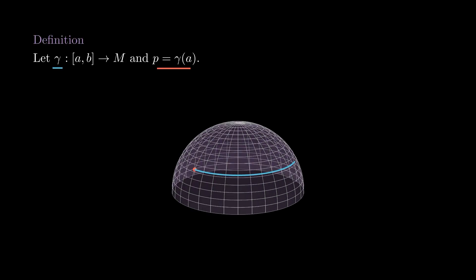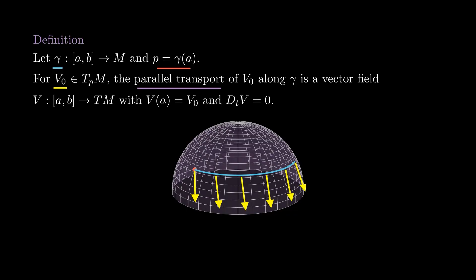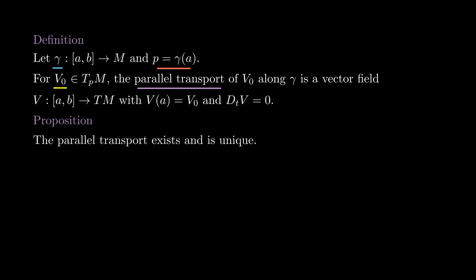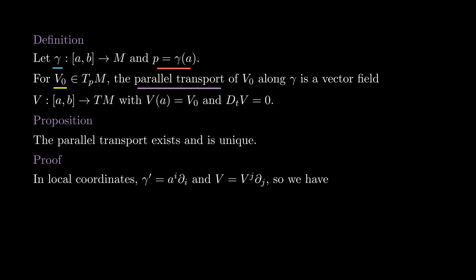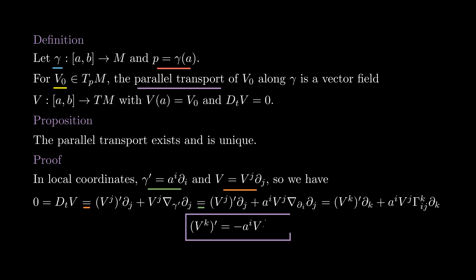Next, we define the parallel transport. Given a curve gamma, we would like to move the tangent space at the initial point along gamma in a straight way — this is what parallel transport does. For a vector V0 in T_PM, its parallel transport is a vector field with initial condition V0 and zero covariant derivative. We show that the parallel transport exists and is unique. In local coordinates, we can write gamma-prime and V in terms of the coordinate vector fields. If we want V to have zero covariant derivative, we have this equation. By the C-infinity linearity of the connection we can expand it, and from here we can substitute the Christoffel symbols. Looking coordinate by coordinate, we get a system of n ordinary differential equations, so given the initial condition V0, there is a unique solution — that is the parallel transport of V0 along gamma.